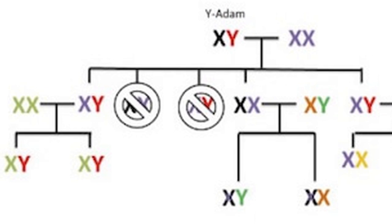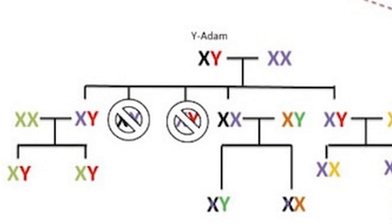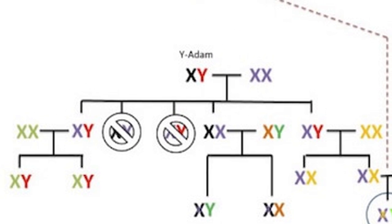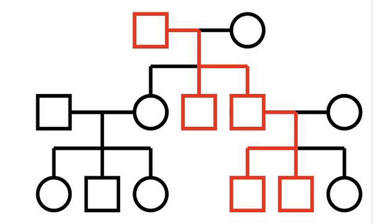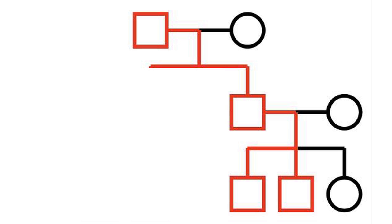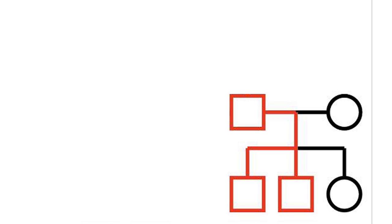Another obvious detail should be that Y-chromosomal Adam is not a singular, static human being. His identity changes over time as bloodlines die out. By definition, this individual must have had at least two sons. If the bloodline of one son were to die out, then the next male descendant with more than one son would become the new Y-chromosomal Adam.